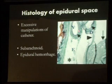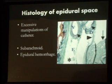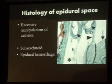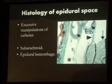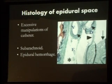Excessive manipulation of the catheter is another concern. This histological slide shows the epidural space, the epidural vein, the dura, and the spinal cord. Excessive manipulation in the epidural space is likely to traumatize this vein, resulting in epidural vein cannulation. It is also likely to traumatize the dura and can result in an intrathecal catheter. So there must be no excessive manipulation of the catheter in the epidural space.